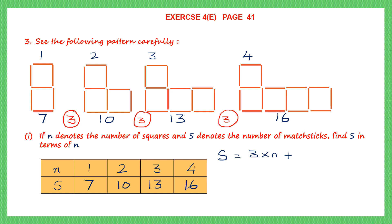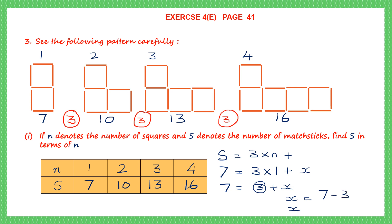We need to find what to add: 3n plus what gives us these values? For figure 1, S is 7, so 3×1 + X = 7, which means 3 + X = 7, so X = 4. Therefore the relation between S and n is S = 3n + 4.